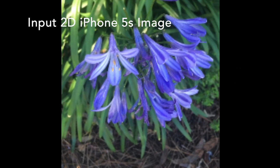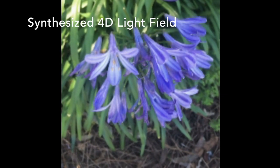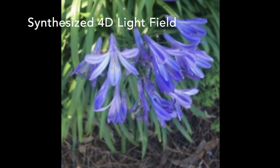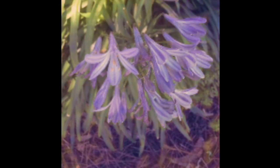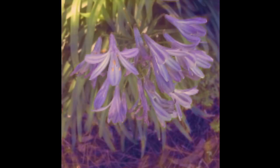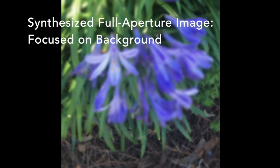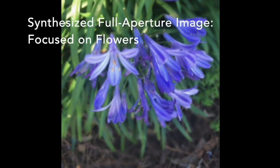We demonstrate that our algorithm can be used to synthesize 4D light fields from images captured by cell phones, such as the iPhone 5S. Using just the small aperture 2D cell phone image, we can synthesize a convincing 4D light field and realistic ray depths. We are even able to generate high quality synthetic defocus blur effects from cell phone imagery and enable users to refocus these images.